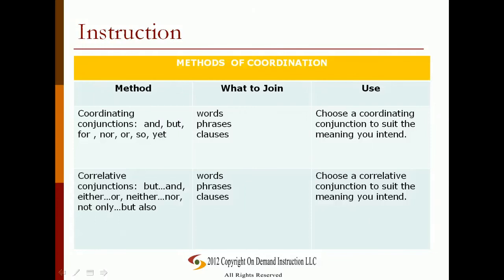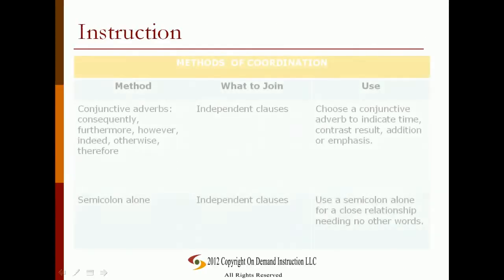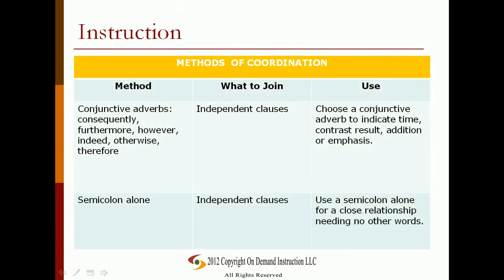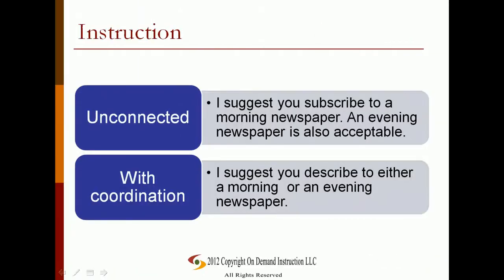You can join ideas of equal importance using four main methods noted in the chart. For example, unconnected: 'I suggest you subscribe to a morning newspaper. An evening newspaper is also acceptable.' With coordination: 'I suggest you subscribe to either a morning or an evening newspaper.'